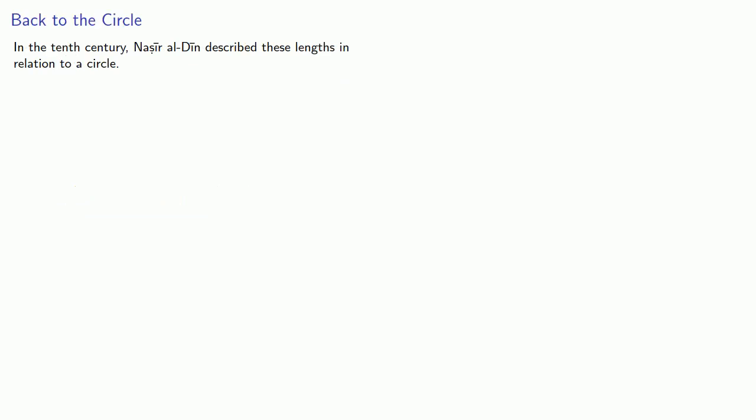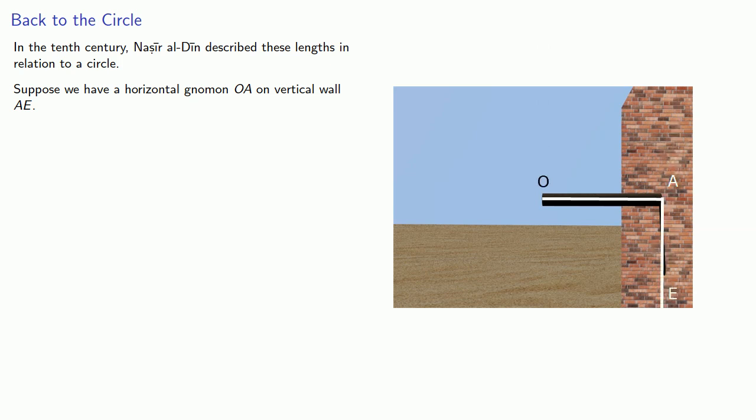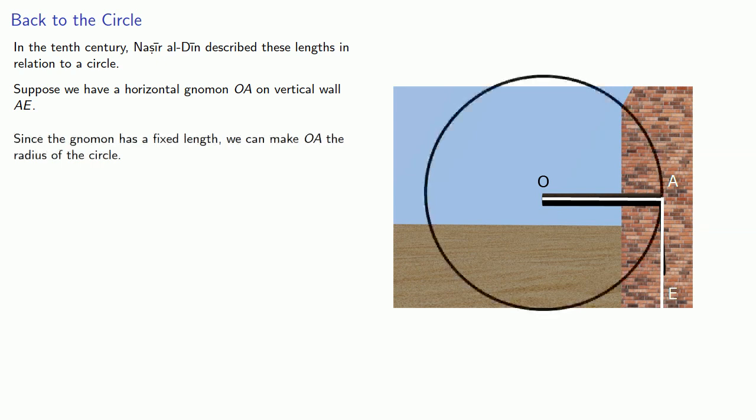In the 10th century, Nasir al-Din described these lengths in relation to a circle. Suppose we have a horizontal gnomon OA on vertical wall AE. Since the gnomon has a fixed length, we can make OA the radius of the circle. Suppose the sun's angle of elevation is theta.